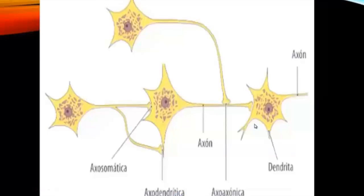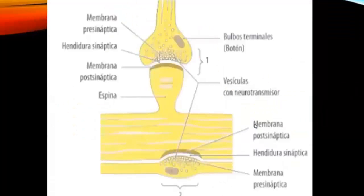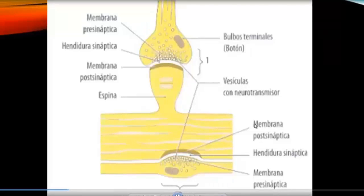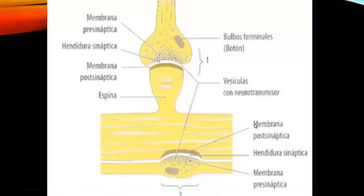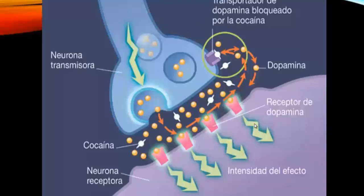In a synapse intervene the presynaptic element, the postsynaptic element, and the synaptic cleft. The synapse is a complex phenomenon where there are ions, vesicles, and chemical substances that are called neurotransmitters that serve to facilitate or inhibit the nerve impulse.